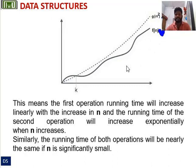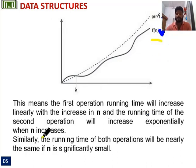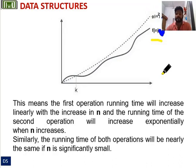The first operation's running time will increase linearly with the increase of n, and the running time of the second operation will increase exponentially when n increases. Similarly, the running time of both operations will be nearly the same if n is significantly small.